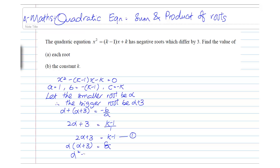So, it will be alpha squared plus 3 alpha equals to minus k over 1, which is equals to minus k. This will be our equation 2.